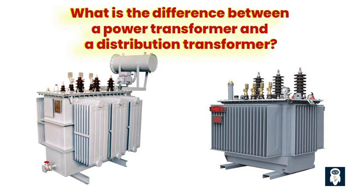Third, maximum efficiency: power transformers are generally less efficient than distribution transformers because of their larger size and heavier currents. A typical distribution transformer might have an efficiency rating of 90 percent or better, compared to around 80 percent for a standard power transformer. However, there are types of power transformers with efficiencies varying from 97 to 99 percent.